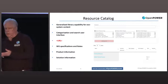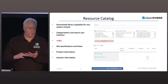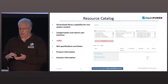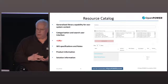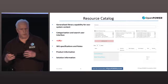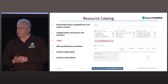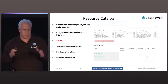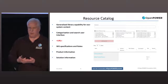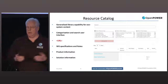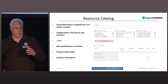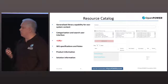This is great for technical things like specifications, but it's really intended for more than that. It's a generalized library capability — we want ecosystem partners to put information in so this is the front end for how you get at information about products, specifications, work group content, and solutions that have been developed. All that stuff will be available through this interface.